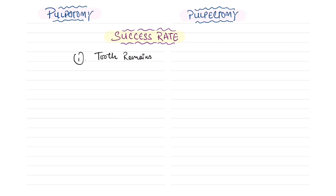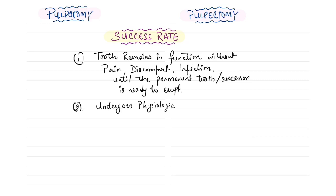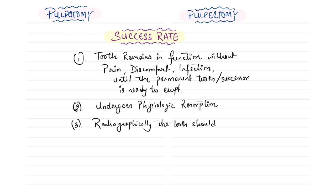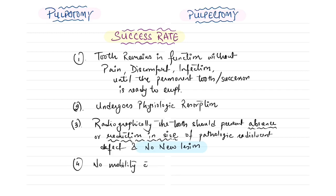For evaluating success rate at follow-up: the tooth should remain in function without pain, discomfort, or infection until the permanent successor is ready to erupt; the treated tooth should undergo physiologic root resorption; radiographs should show absence or reduction in pathologic radiolucency with no new lesion; and there should be no tooth mobility.